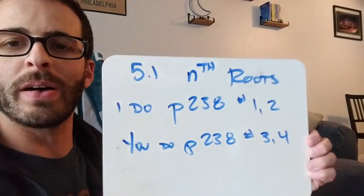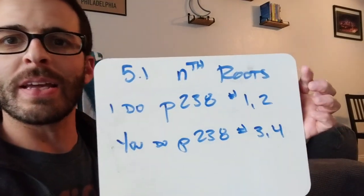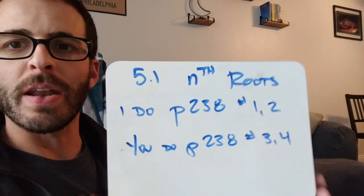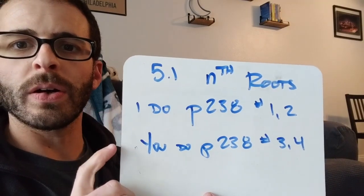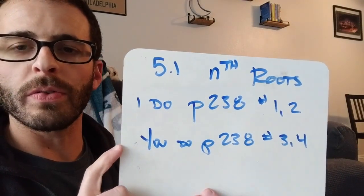All right, August and I are here for chapter 5, section 1. First thing we're going to talk about is the nth root of a number. We're going to turn to page 238 right now. I'm going to do 1 and 2, and you're going to do 3 and 4 for practice.